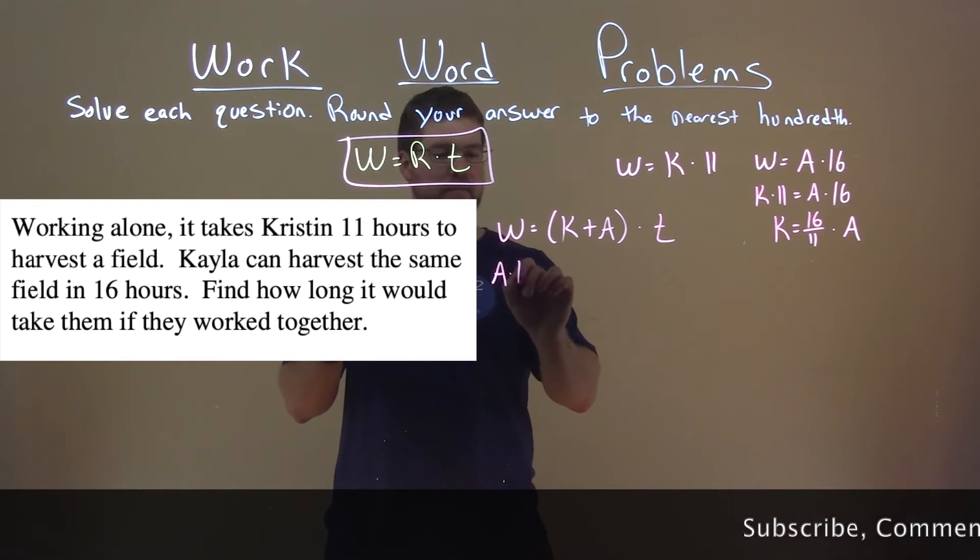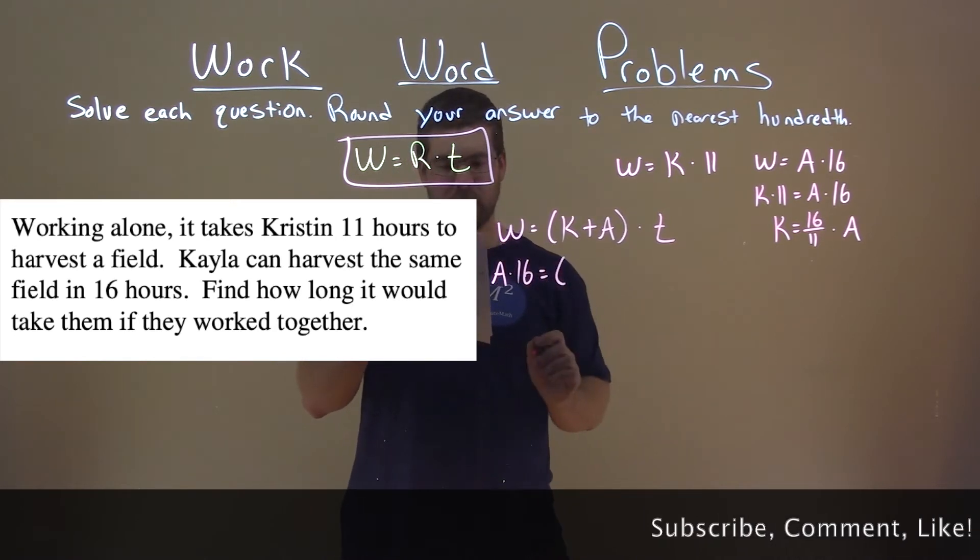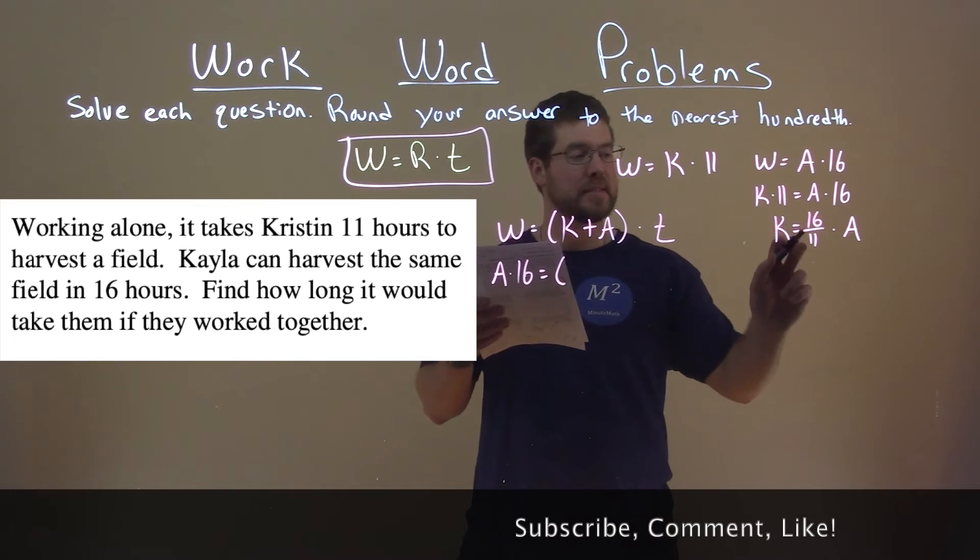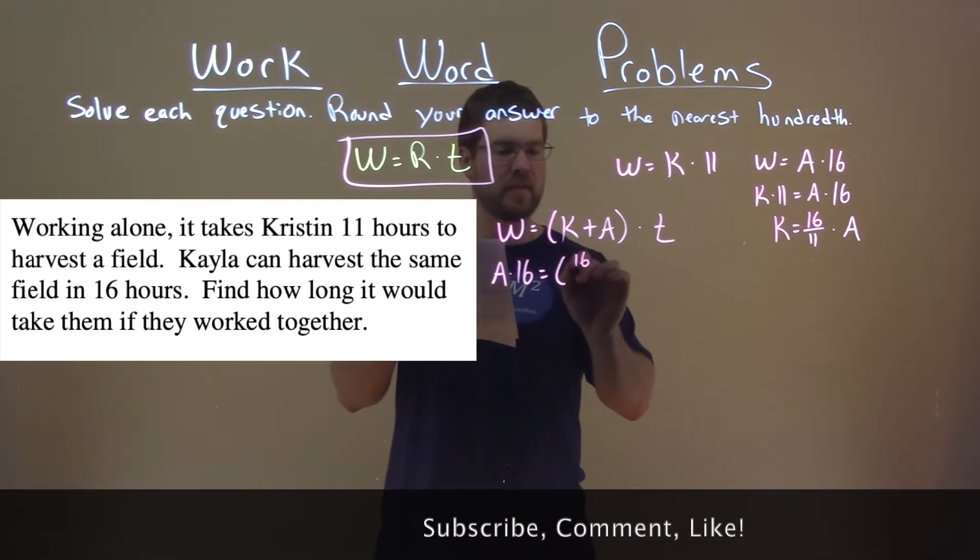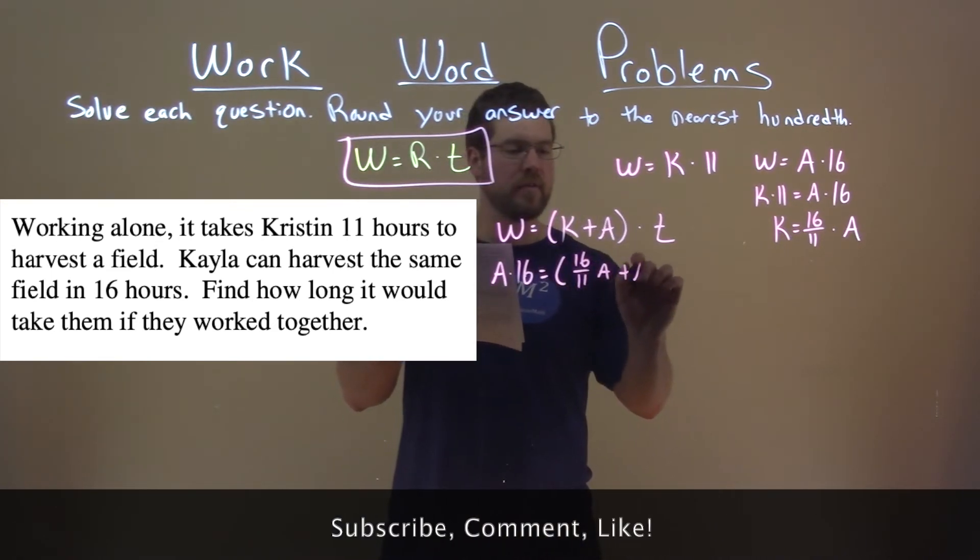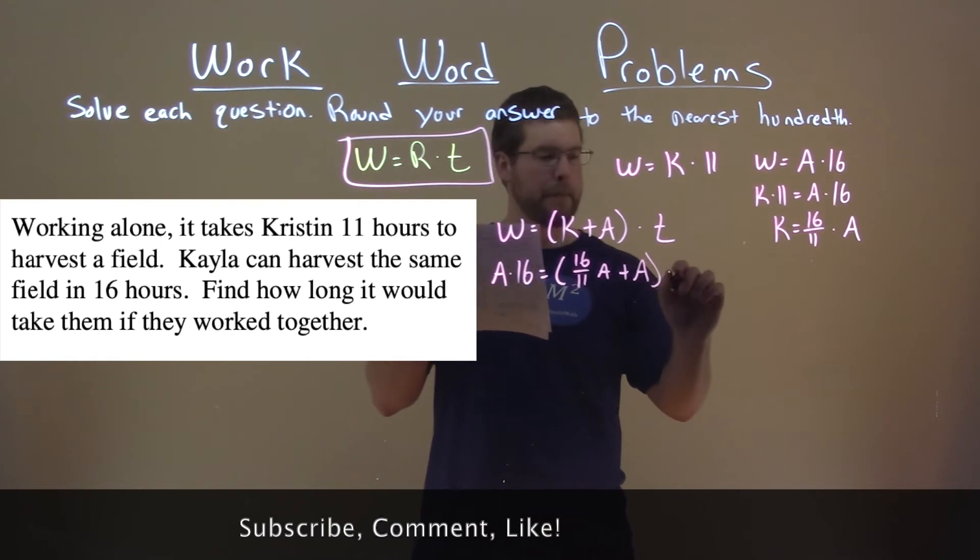So we have A times 16 is equal to... Now, K we also found to be 16 over 11 times A. 16 over 11 A plus 1 A times T here.